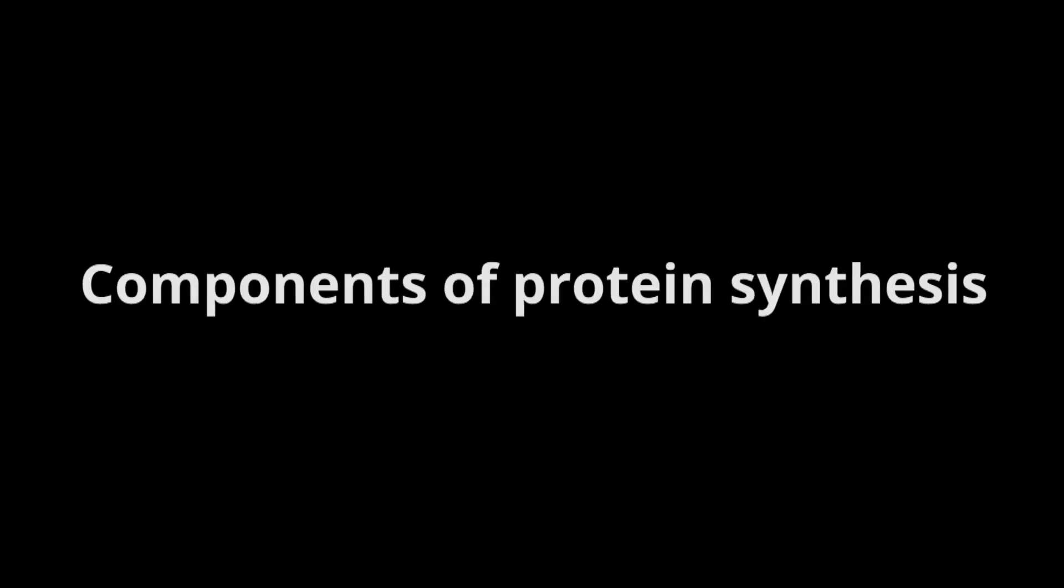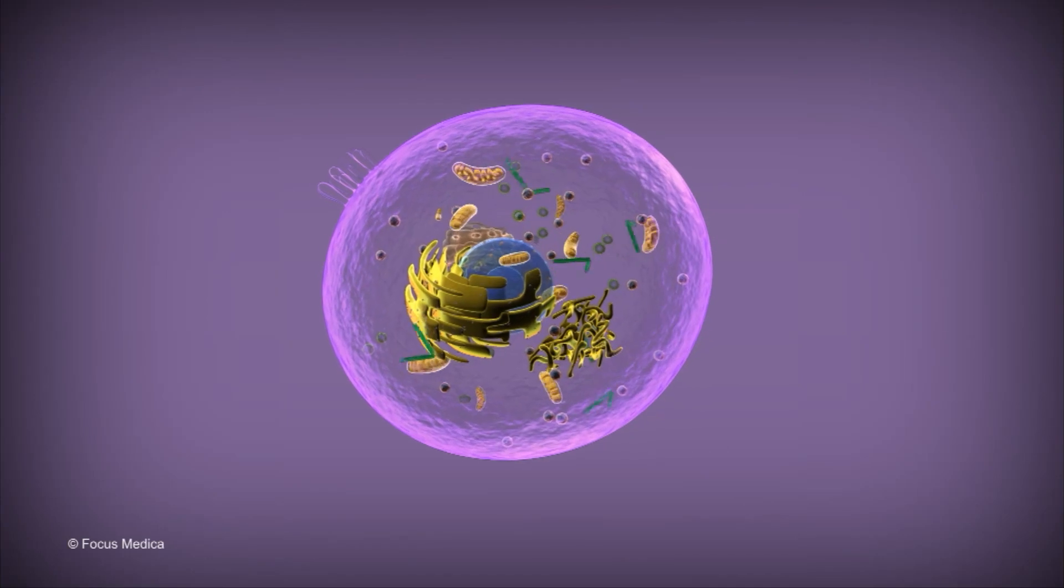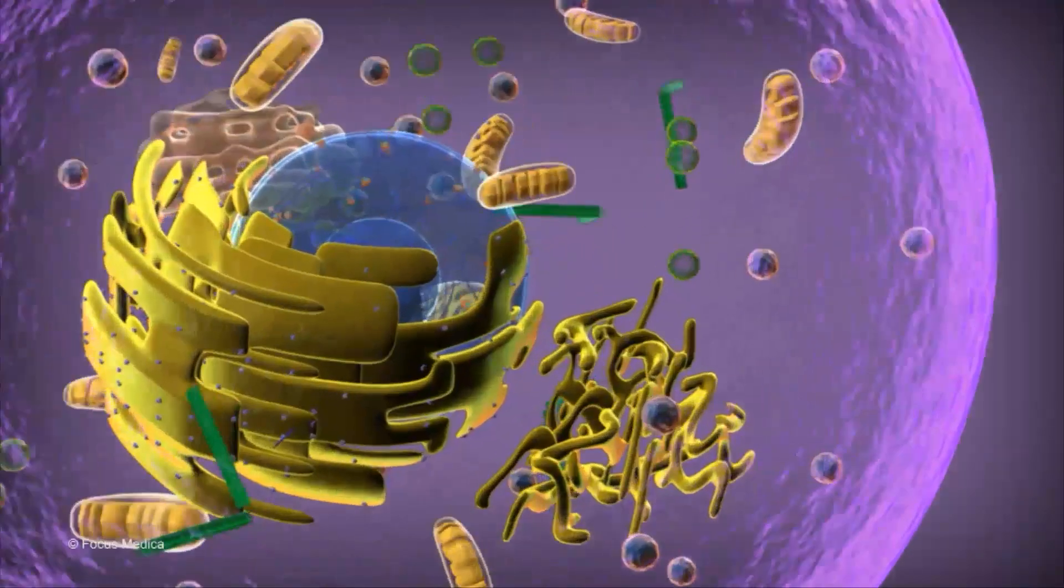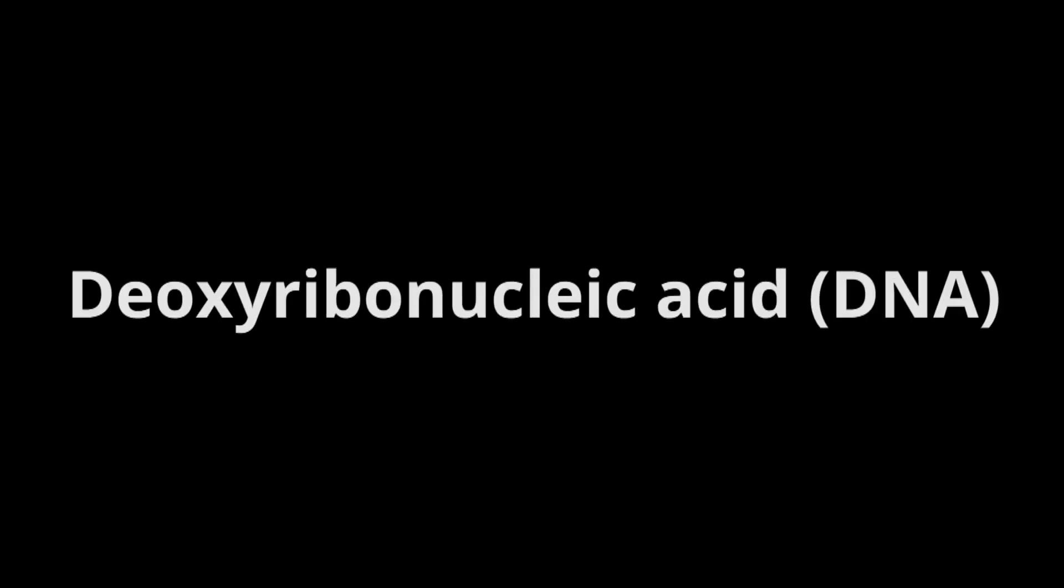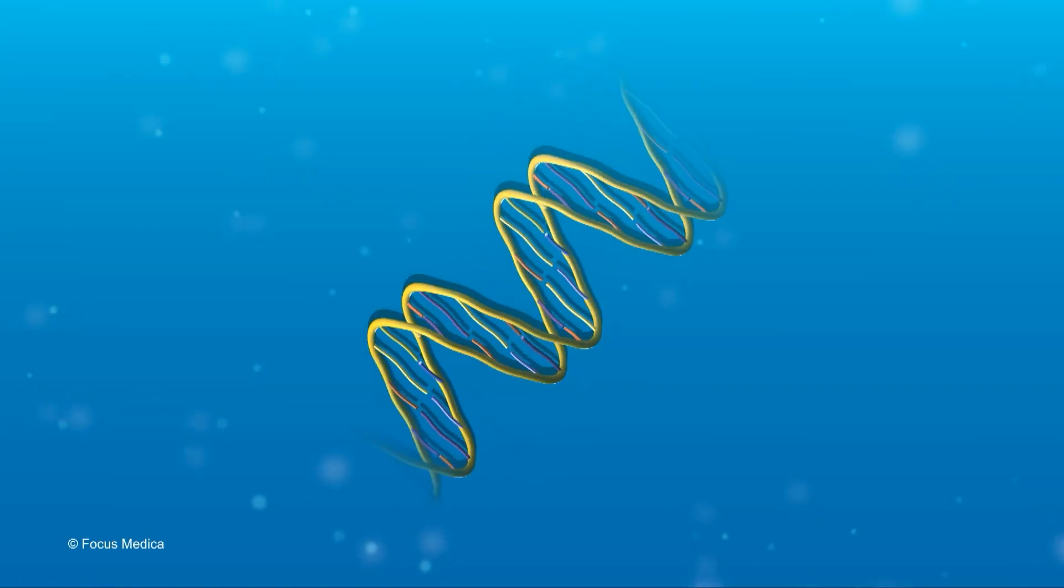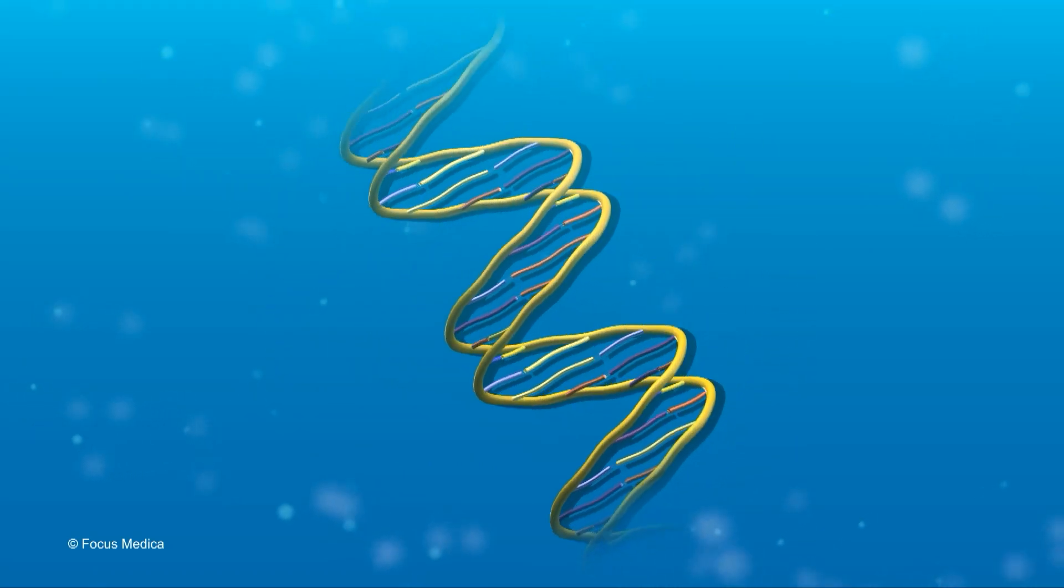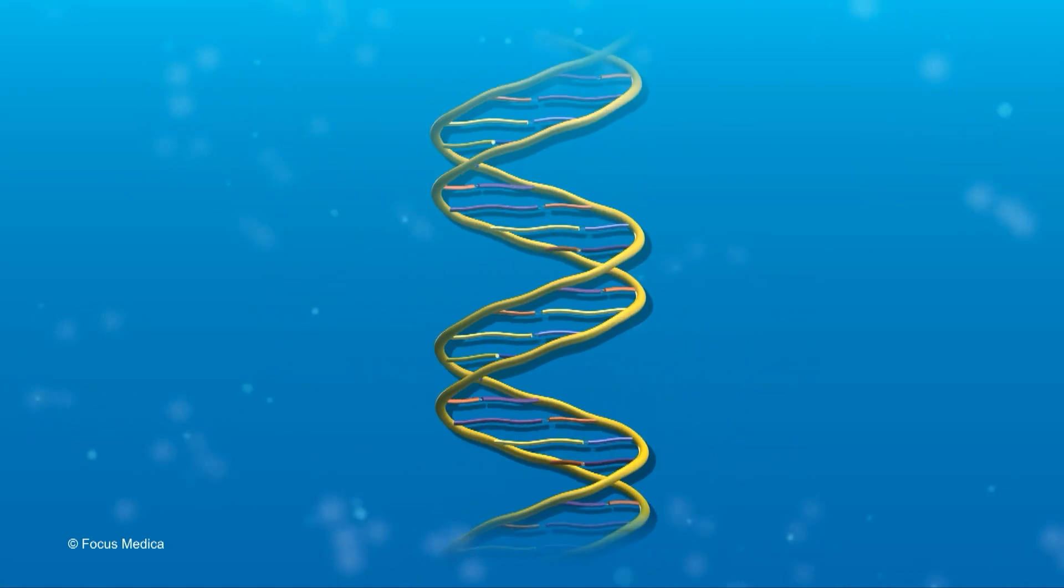Components of protein synthesis. The components of protein synthesis include a pool of 20 different types of amino acids, deoxyribonucleic acid, DNA. DNA is the primary hereditary material found in almost all living systems.